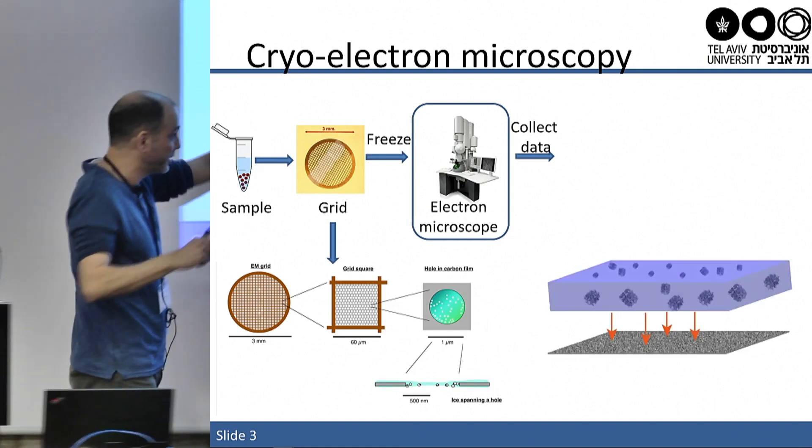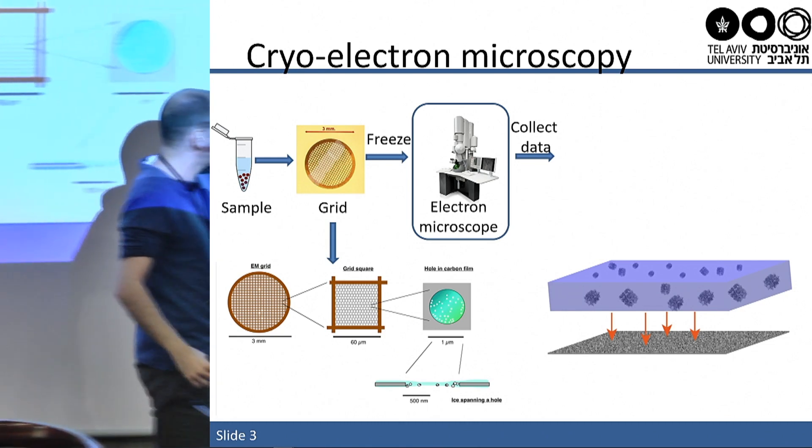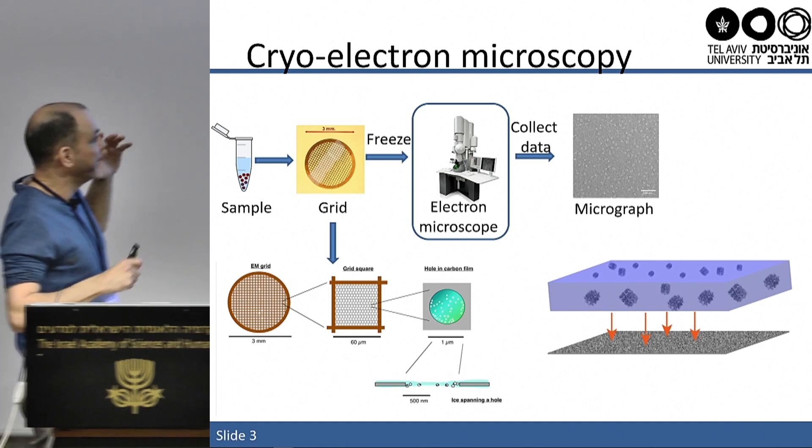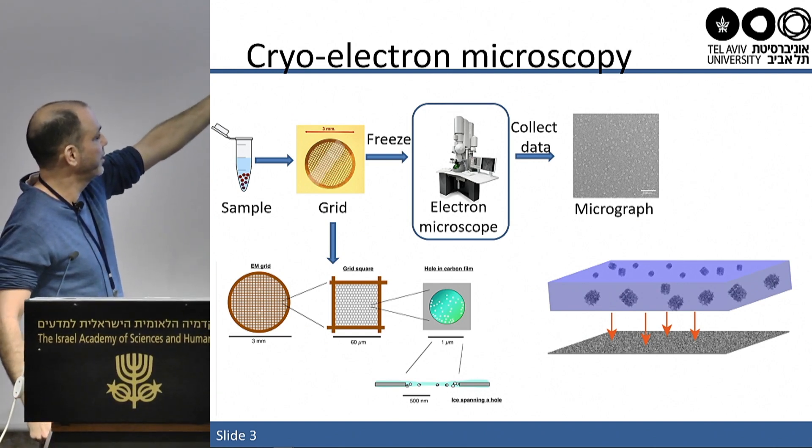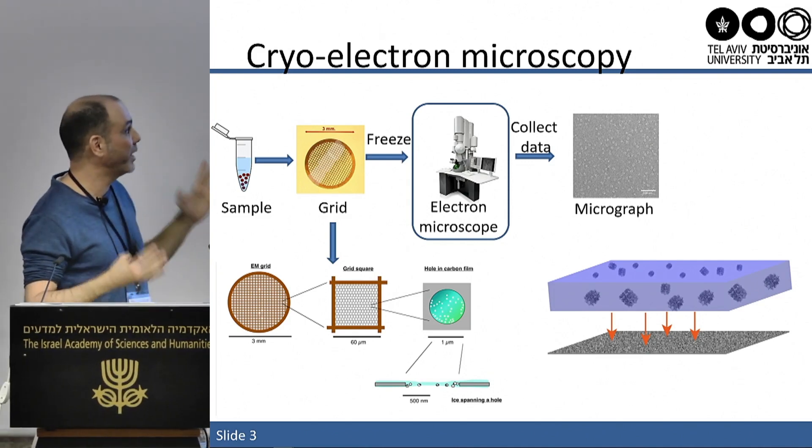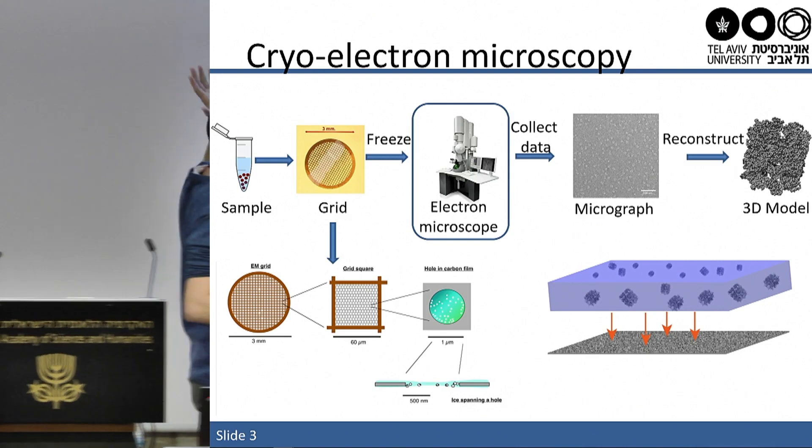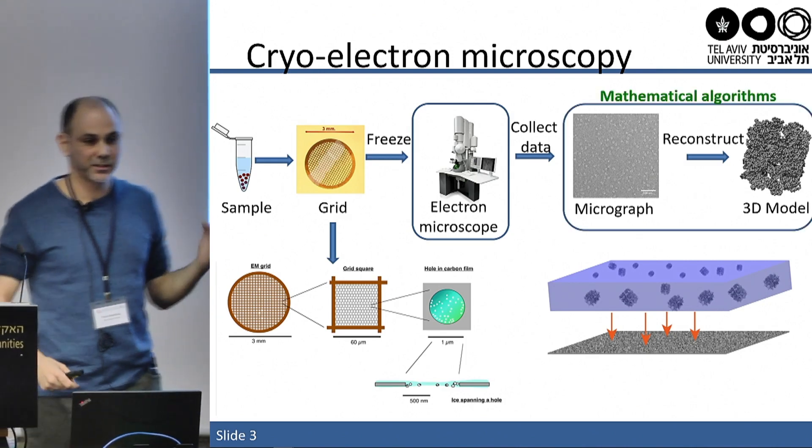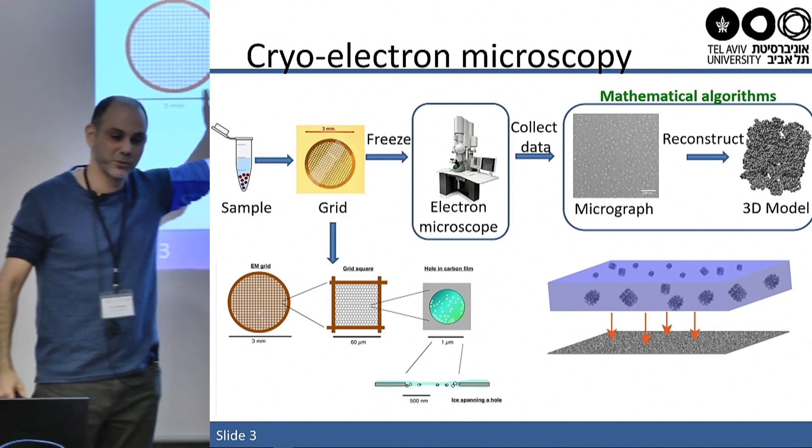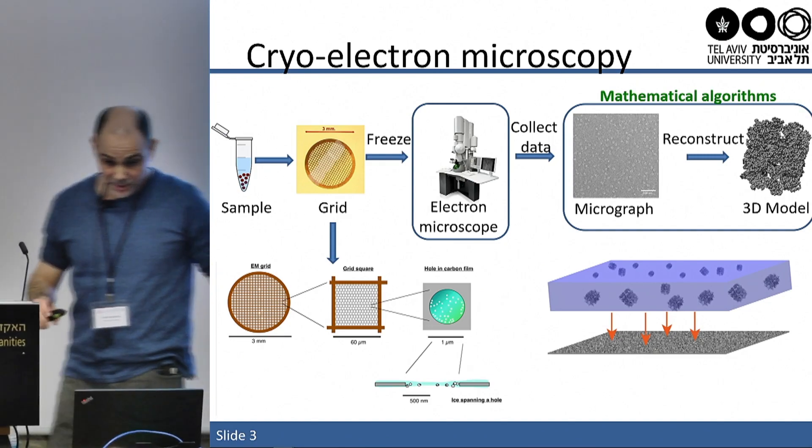And then we take the sample to an electron microscope and we start to collect data. What we're actually doing, this is our ice layer with randomly oriented molecules. We project it with an electron beam and we simply record the two-dimensional image at the bottom. Essentially we're counting electrons. And the output from the electron microscope is a two-dimensional image containing several images of particles that we call micrographs.